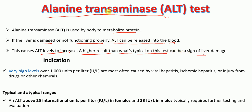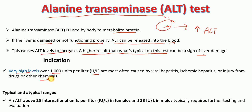When there is liver damage, there is an increase in the release of ALT into the blood. So if there are higher levels of ALT in the blood, that indicates some problem with the liver. Very high levels — over 100,000 units per liter — are most often caused by viral hepatitis, ischemic hepatitis, or injury from drugs or other chemicals.